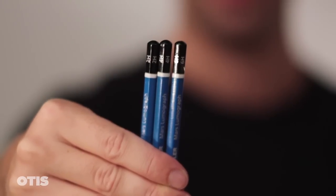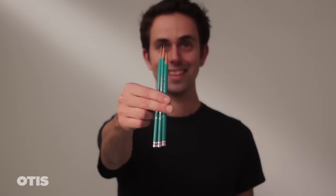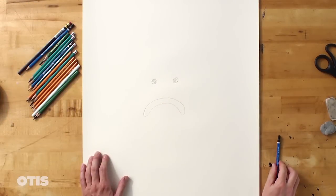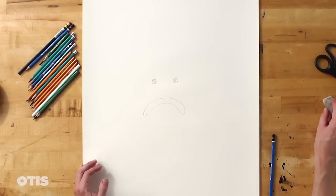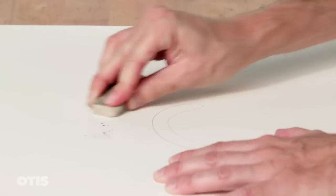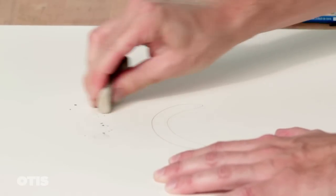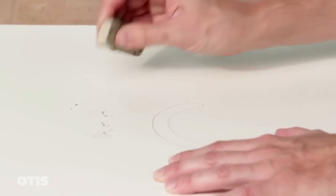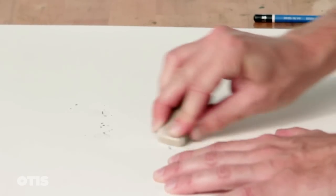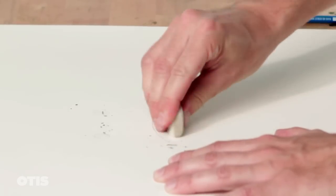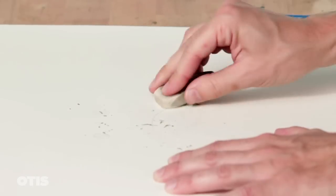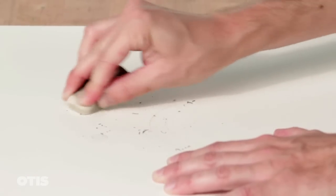H pencils are hard and light, while Bs are soft and dark, meaning more graphite comes off. The higher the number indicates how hard or soft they are, usually running from 6H to 9B for most brands. It is not necessary to purchase every hardness of pencil, but make sure you have a variety of values.